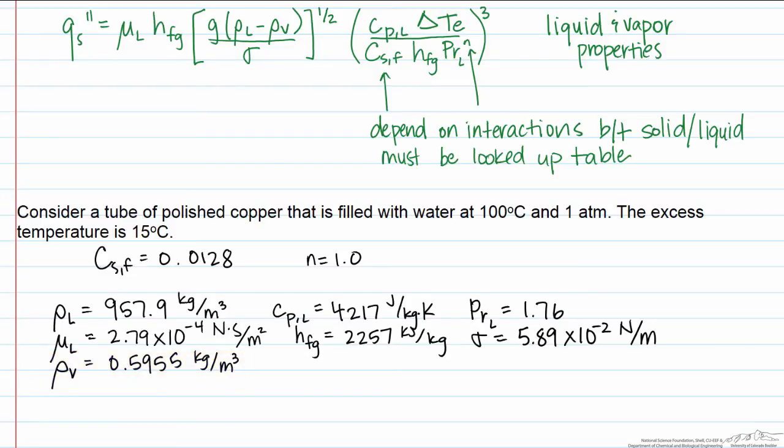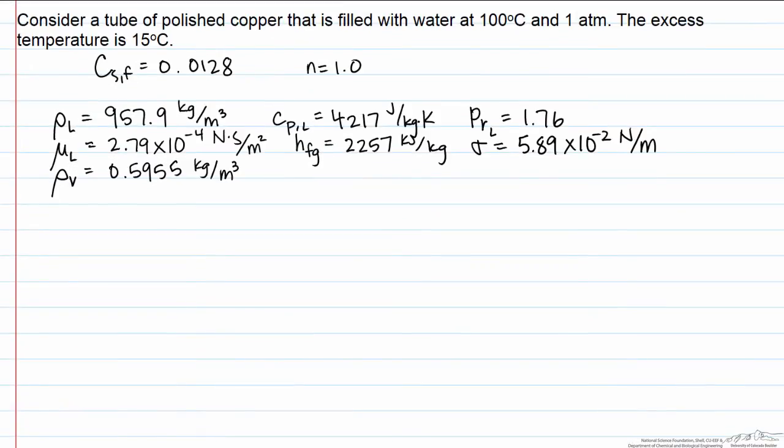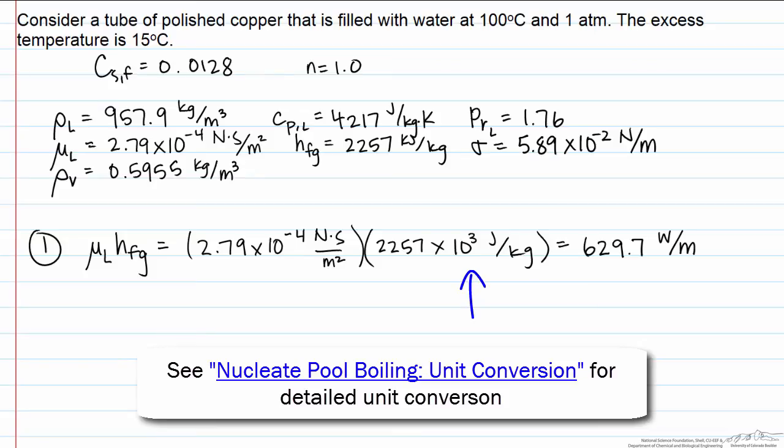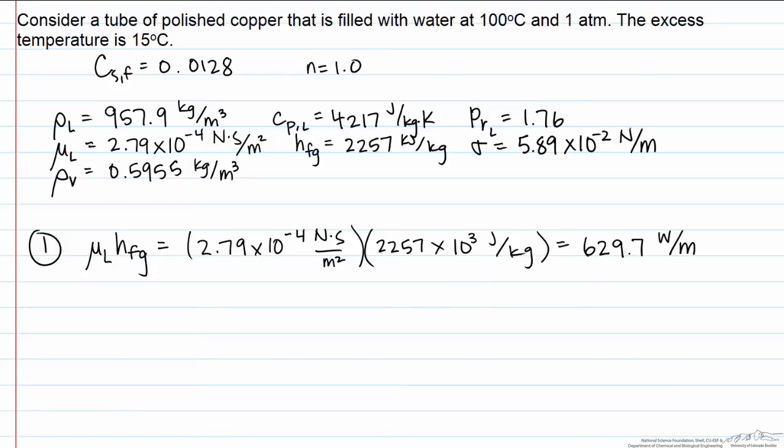Now it's just a matter of putting all of these values into our heat flux equation and solving for the heat flux. I divided the calculation up into three parts to ensure that I don't make an arithmetic mistake. This is part one, this is part two, and this is part three. If we take a look at part one, we find that the answer is 629.7. Since everything else is in joules, we need to put the heat of vaporization in joules, so I multiplied that value by ten to the third.